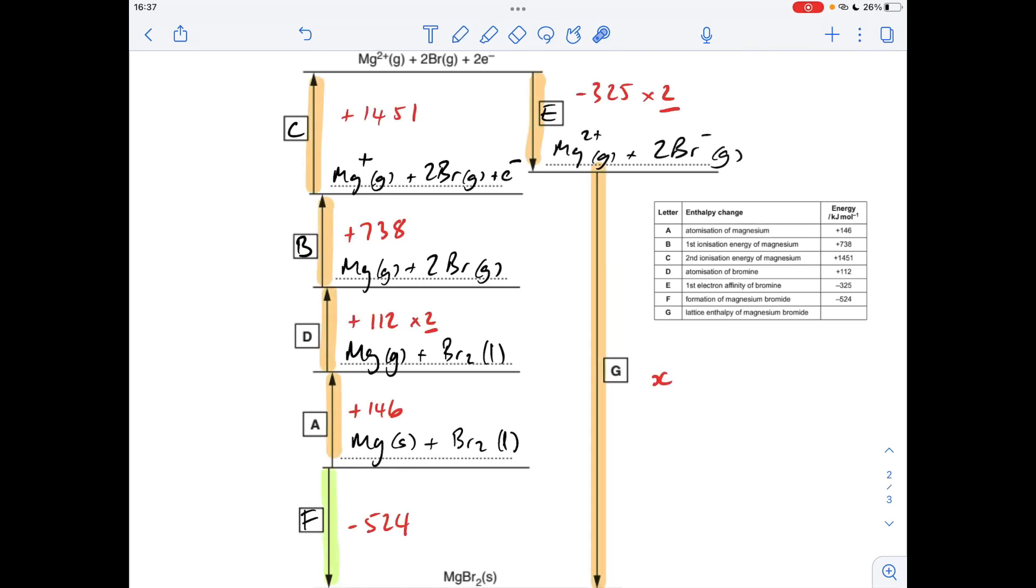And finally the calculation. You can see I've put in all the enthalpy change values, so just talk about a couple of them. This one here is the atomisation of bromine, you can see we're generating two gaseous bromine atoms, so we have to double that one. And we're generating two gaseous bromide ions here, so we need to double that one.